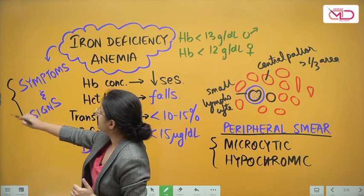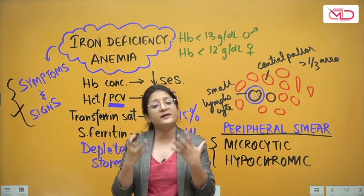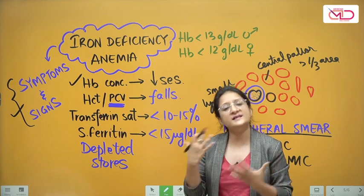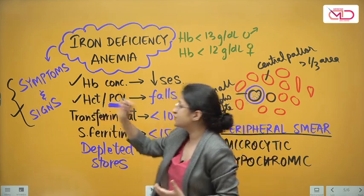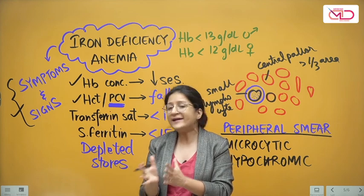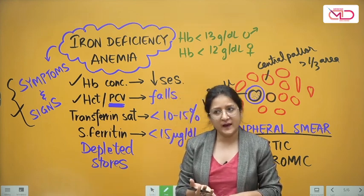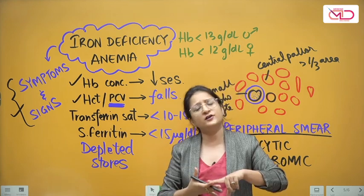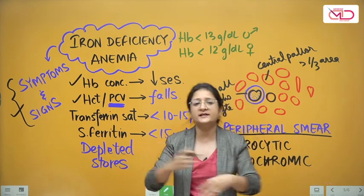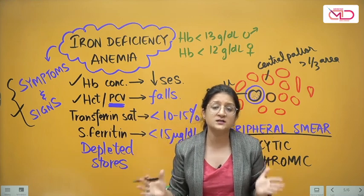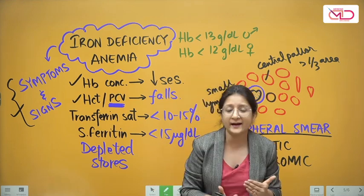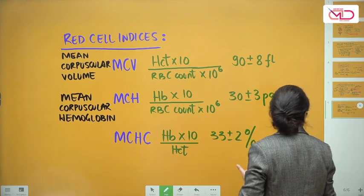The next step is to find out what kind of anemia it is — iron deficiency, folate deficiency, vitamin B12 deficiency, hemoglobinopathy — there are many causes in pathology textbooks and you must make the correct diagnosis for proper treatment. You go ahead and check the RBC indices.